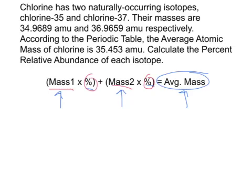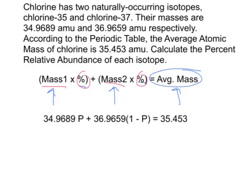So what we're going to do is create two variable expressions for the two percentages. Substituting in the masses and a variable expression for the two percents, I use p to represent one percentage. It doesn't really matter which one you choose to be p, but what's important is that the second one is going to be 1 minus p.